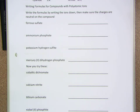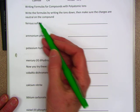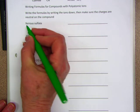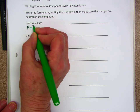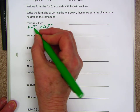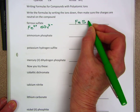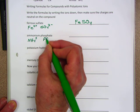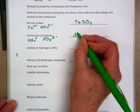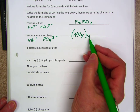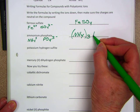Ferrous is iron(II), sulfate is SO4(2-). So for ferrous sulfate: +2 and -2, the formula is FeSO4. Ammonium is NH4(+1), phosphate is PO4(3-). Now I have to use parentheses to make this electrically neutral. Because ammonium has a +1 charge, I need 3 of them, so (NH4)3PO4.